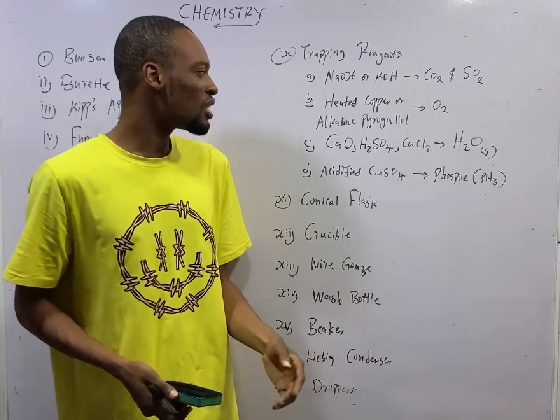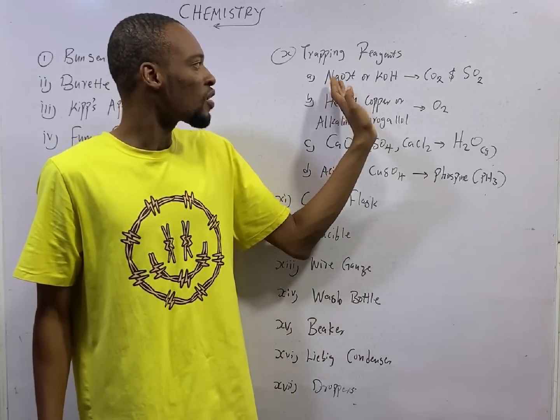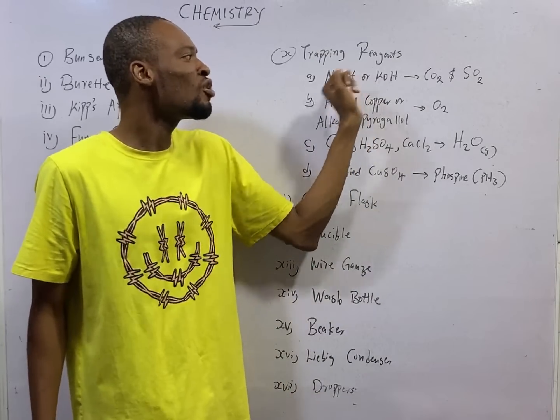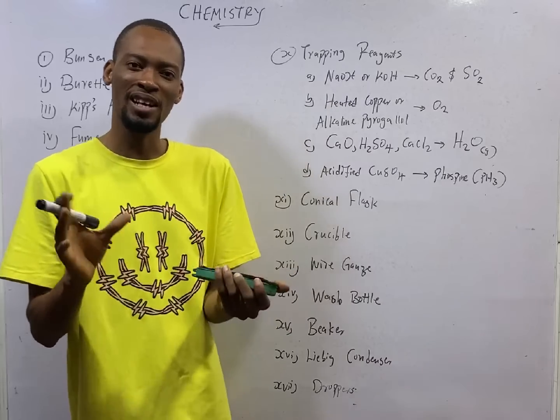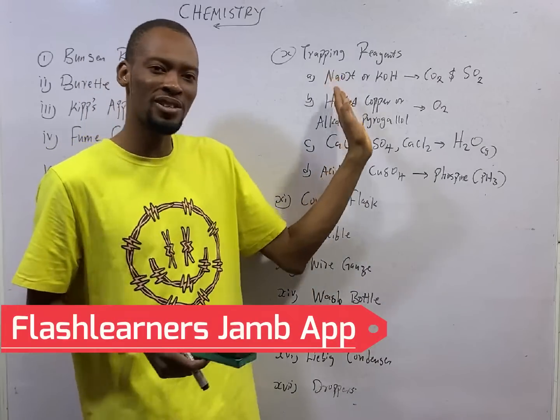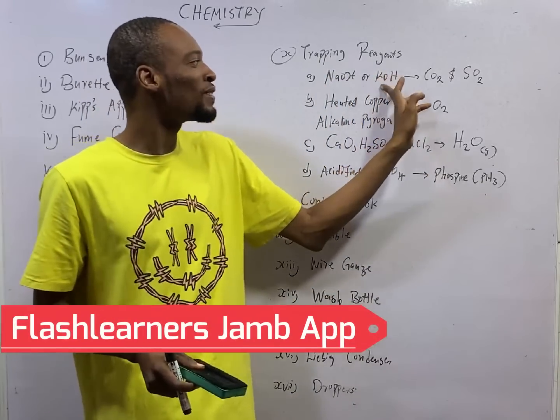The other trapping agents JAMB expect you to know are caustic soda. NaOH is referred to as caustic soda. That is the common name. Sodium hydroxide is caustic soda.